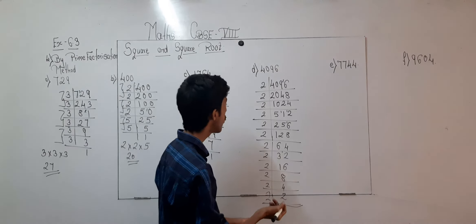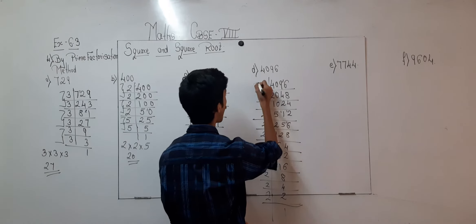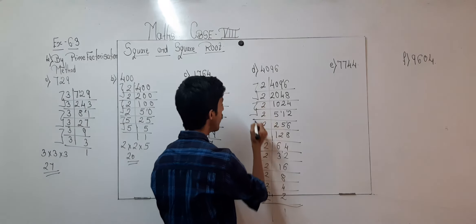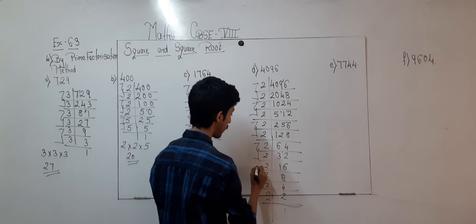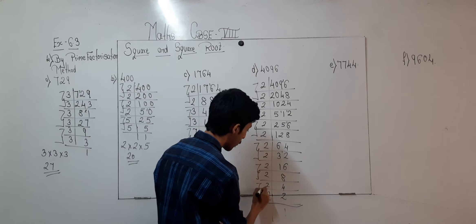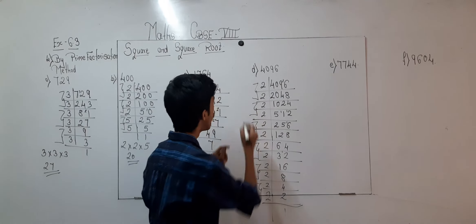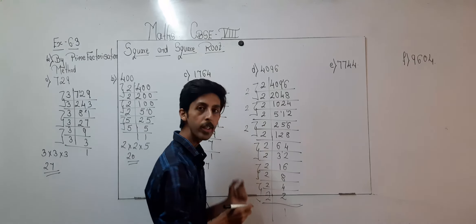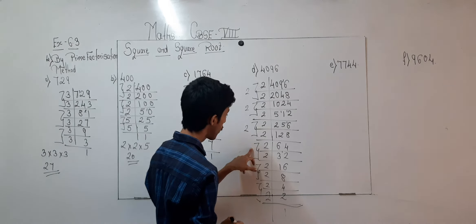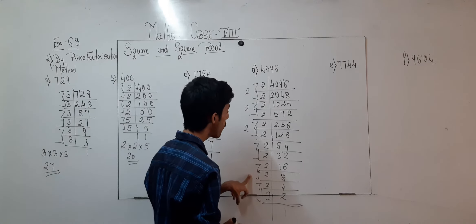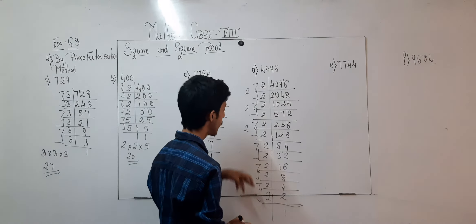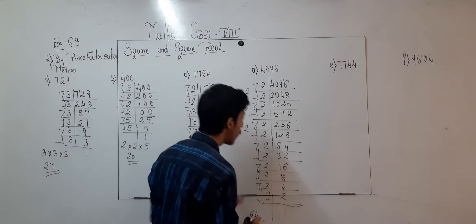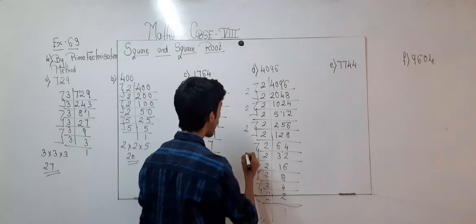I can write it this way also. For each pair of 2, we write 1. So 2 into 2 gives 4, 4 into 2 gives 8. Again 2 into 2 gives 4, and again 8. So 8 into 8 gives 64. Therefore 64 squared is 4096.